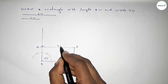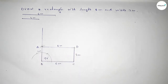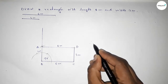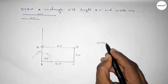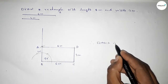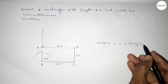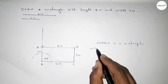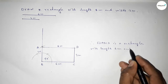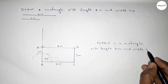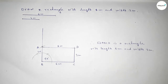So this is 6 centimeter, this is 3 centimeter, and this is 6 centimeter. Therefore rectangle ABCD is a rectangle with length 6 centimeter and width or breadth 3 centimeter. That's all — thanks for watching. If this video is helpful to you then please share it with your friends. Thanks for watching.